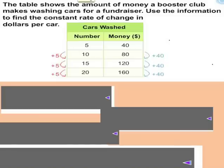So let's take a look at the first example. It's been done for us, but the table shown here shows the amount of money a booster club makes washing cars for a fundraiser. Use the information to find the constant rate of change in dollars per car. Well, looking at this table I noticed that if I wash 5 cars I get $40, 10 cars gets me $80, 15 cars gets me $120, and 20 cars gets me $160.